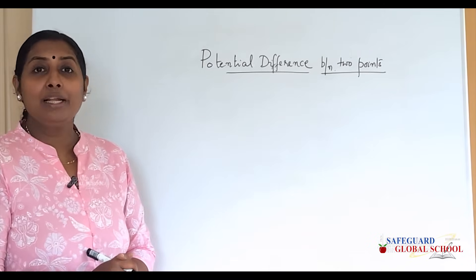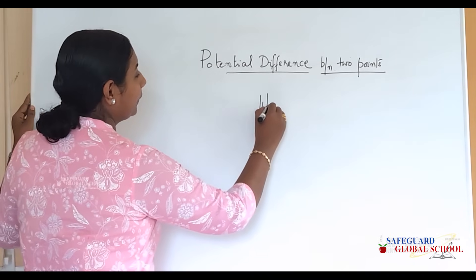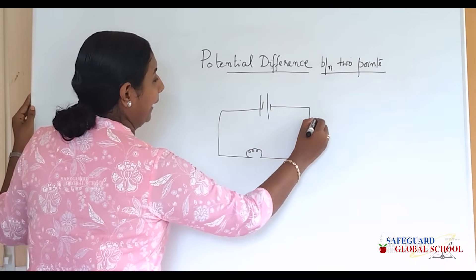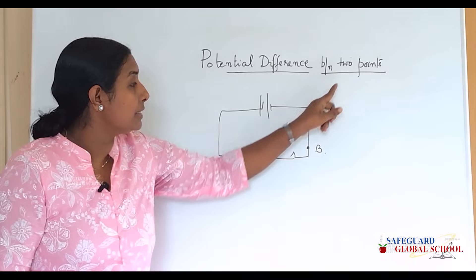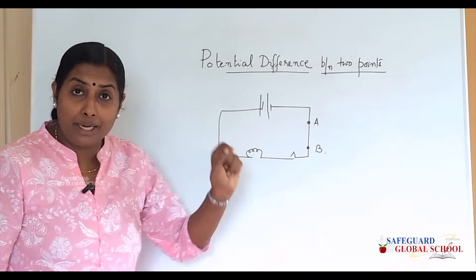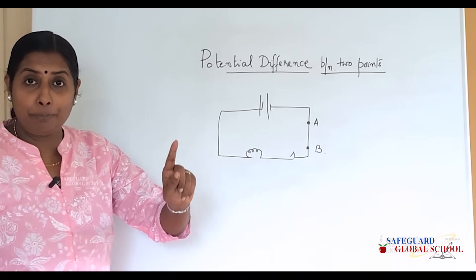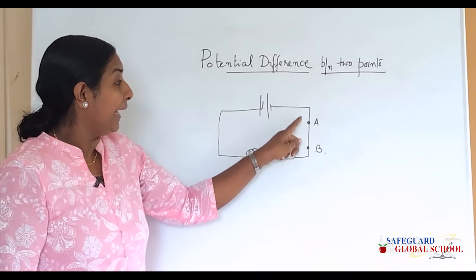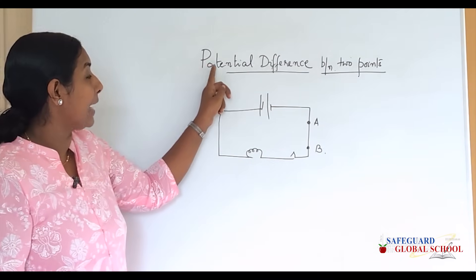Now we will study about potential difference between two points in a circuit. Let us draw a circuit where I am going to mark two points A and B. The potential difference between two points A and B is the work done by the battery to move a charge from point A to point B. It is the work done per unit charge, and from that we get the concept and definition of potential difference.